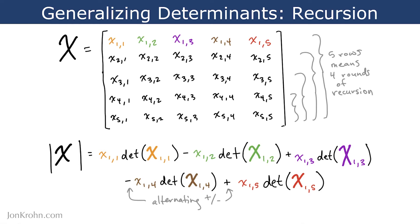Okay, so we know how to calculate determinants for 2x2 matrices, and now we can generalize that understanding and calculate determinants for larger matrices, such as this 5x5 matrix, using recursion.